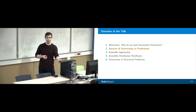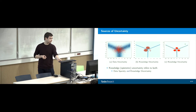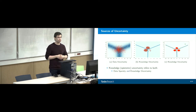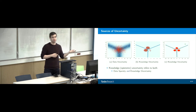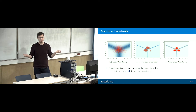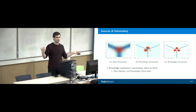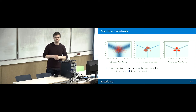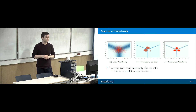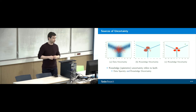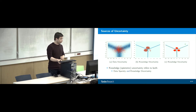So where does uncertainty come from? There are typically two sources: data uncertainty and knowledge uncertainty, also known as aleatoric and epistemic uncertainty. But those are pretentious names, so we just call them data and knowledge uncertainty.